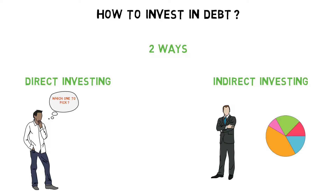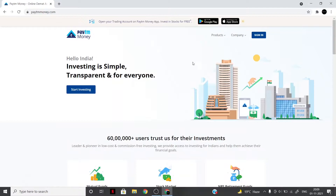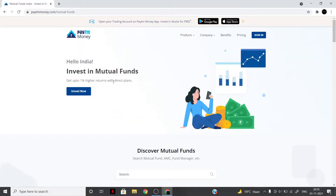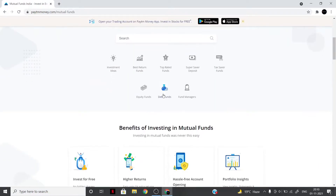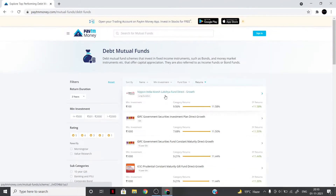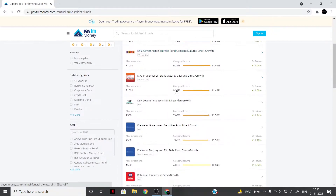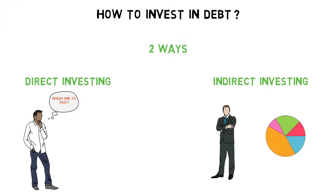अगर आपको indirectly debt में invest करना है, तो यह आप किसी भी fintech के through कर सकते हैं, such as Groww, Paytm Money, Coin, ET Money, etc. आपको simply उस fintech के site या app पे जाके mutual fund वाले section में जाके debt funds को select करना है, and जितने भी debt funds इस समय market में investment के लिए available होंगे, वो आपको सारे show हो जाएंगे along with their returns and their minimum investment required. इन सारे debt funds में से जो आपको अच्छा लगे, आप उसमें अपना पैसा invest कर सकते हैं.